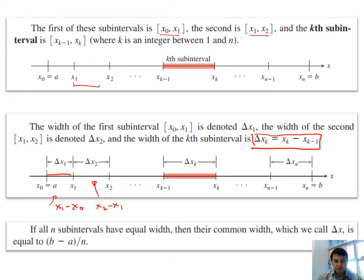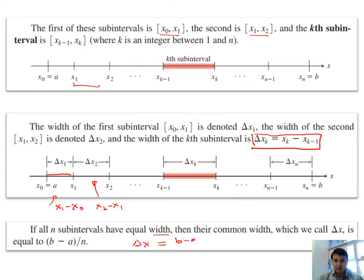When all sub-intervals have equal length — that is, equally spaced points — each sub-interval has length Δx = (b - a)/n, since b - a is the total length divided equally among n intervals. However, for a general Riemann sum we do not require all intervals to have equal size.